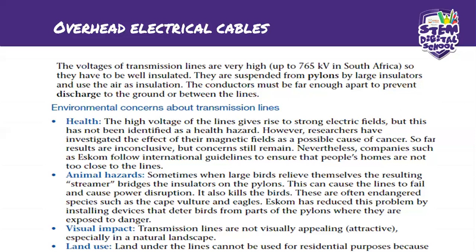The voltage transmission lines are very high and have to be well insulated to protect the cable from factors like rain and other things that can damage it. A cable gets insulated so it can be protected. They're suspended from pylons by large insulators and use the air as insulation. The conductors must be far enough apart to prevent discharge to the ground between the lines. The pylons are the ones that have to be insulated, and they're very dangerous, so do not ever play with those things.